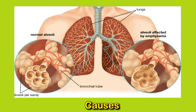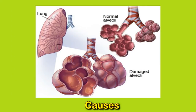Oxygenated blood then leaves the lungs and travels around the body to other tissues. Vital organs and systems, especially the brain and heart, need enough oxygen to survive. COPD damages the air sacs in the lungs and interferes with this process. If the damage reaches a critical point, a person may develop hypoxia.